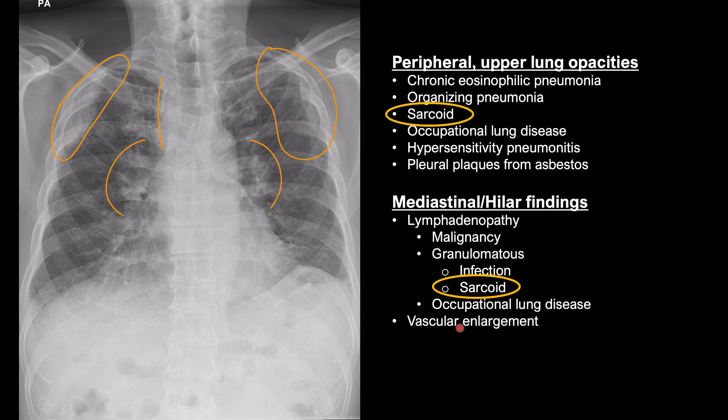The mediastinal and hilar findings are typical, but the lung findings are not that common, although they're not rare, and they are well described.